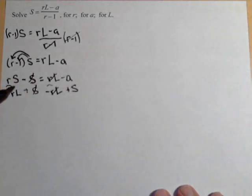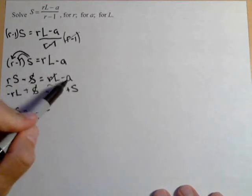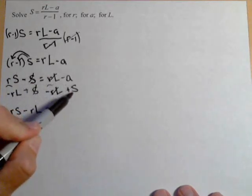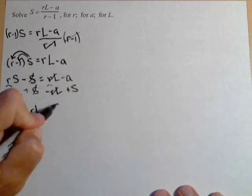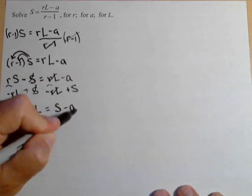So once again, that's gone. So looking at what we have left, we have an RS minus RL on the left-hand side. On the right-hand side, we have a negative A and a positive S, and we can put those in either order as long as we keep our signs. So let's write it as S minus A.